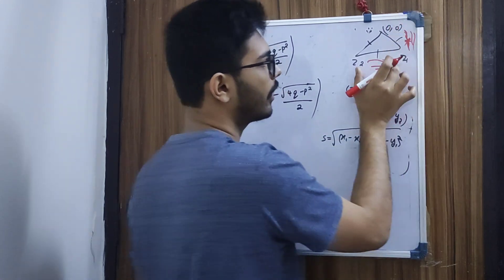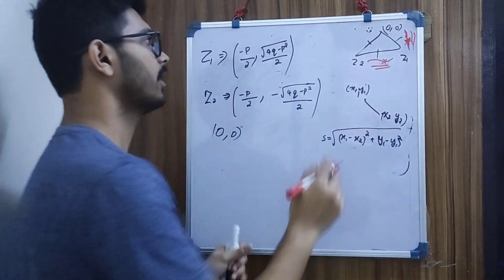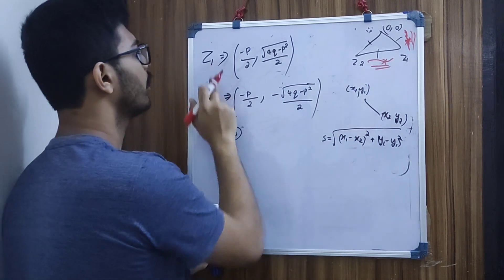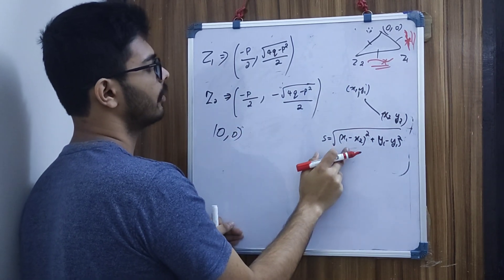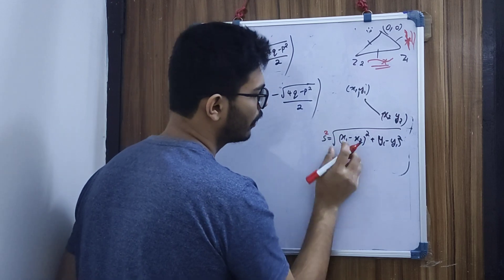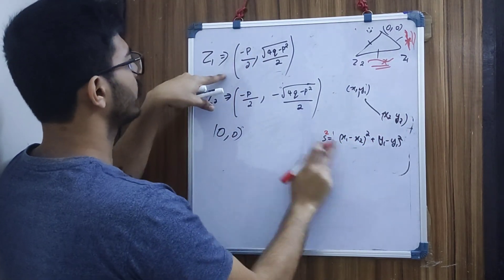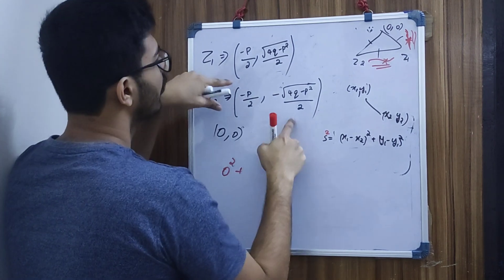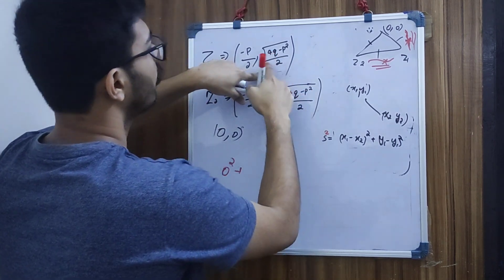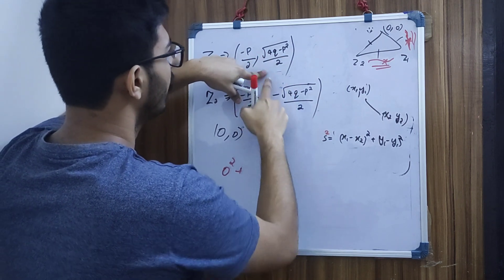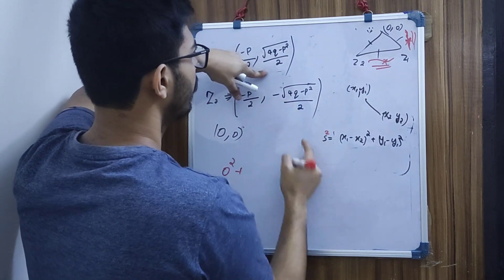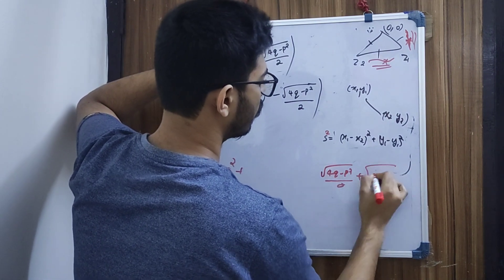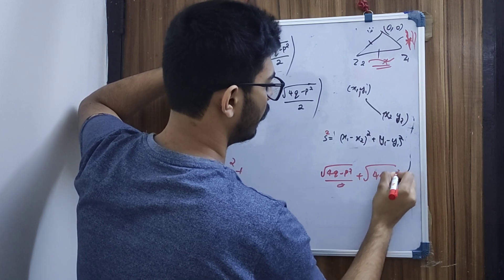The distance between z1 and z2: the x-coordinate difference is −p/2 minus (−p/2) = 0. The y-coordinate difference is √(4q − p²)/2 plus √(4q − p²)/2, giving √(4q − p²)/2 + √(4q − p²)/2.